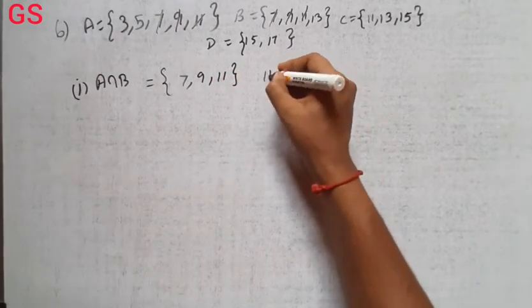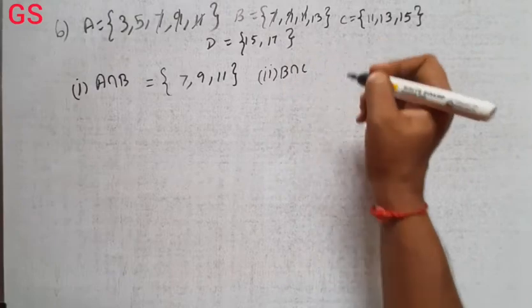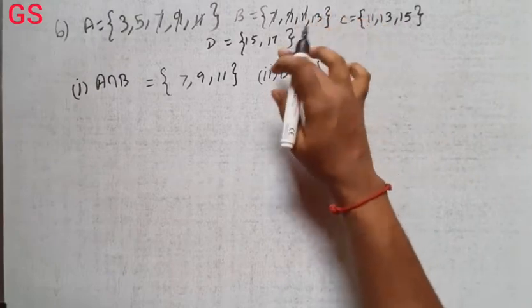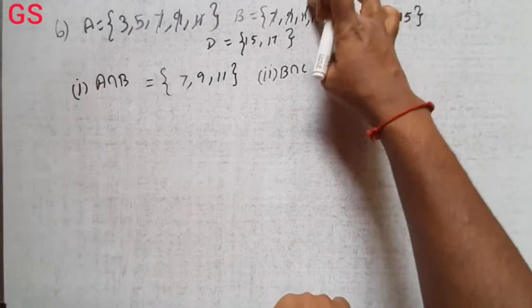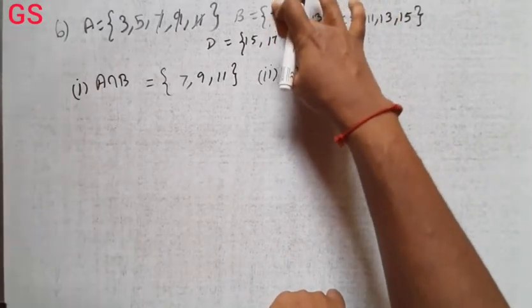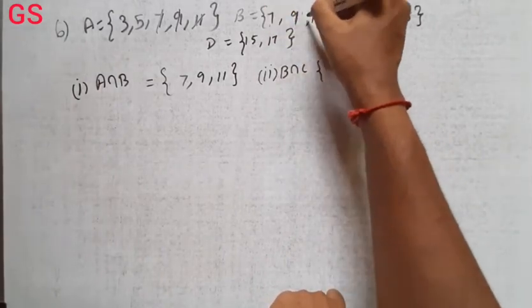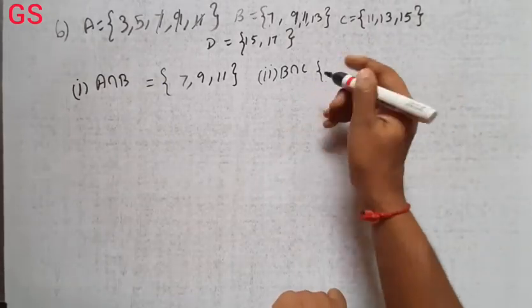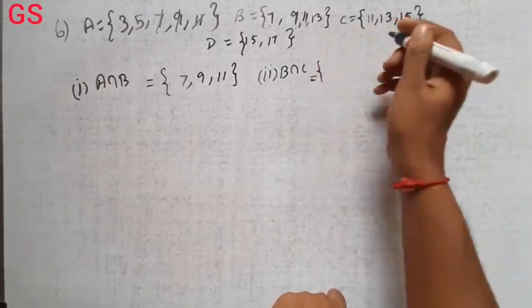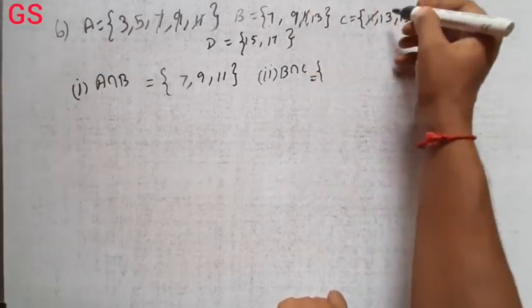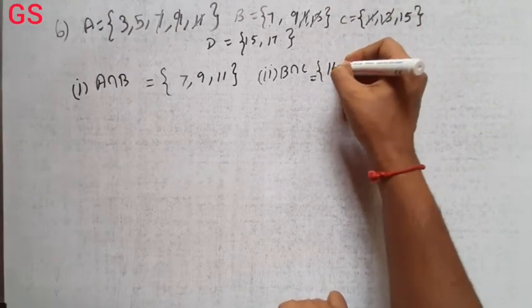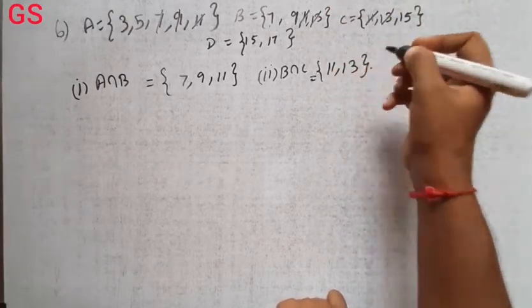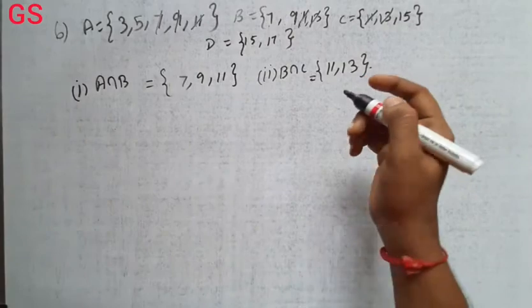Second subdivision, that is B intersection C. So B and C are the same. Now, let's see what is 7, 9, 11. So B is the intersection. If you find it, what is common is 11 and 13. So, 11 and 13 are common. B and C are the intersection.